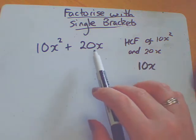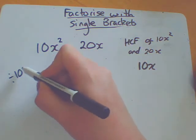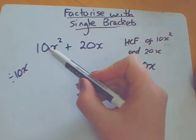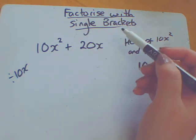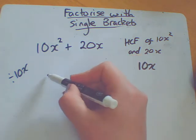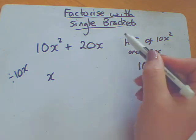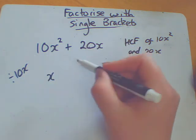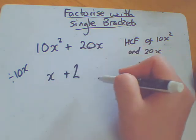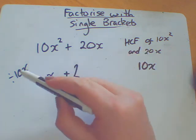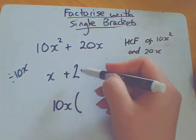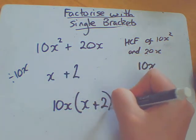So I'm going to have to divide all of this by 10x. Again, it sounds horrible, but it really isn't. Do the numbers, then do the letters. So 10 divided by 10 is just 1. x squared divided by x is just a single x. 20 divided by 10 is 2. x divided by x, they cancel each other out, they go away. So again, you've got the bit that goes on the outside, your factor of 10x. x plus 2 is what is going to go inside your bracket.